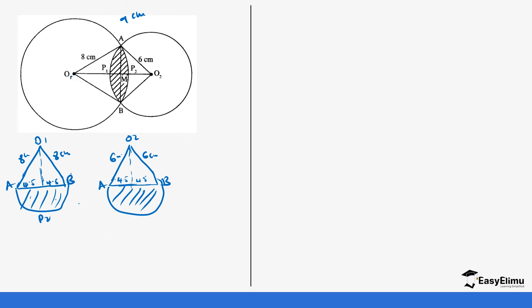So basically we look for the area of this minor segment and this minor segment and then we add them together. Let's start by looking for the height so that we can get the angle.